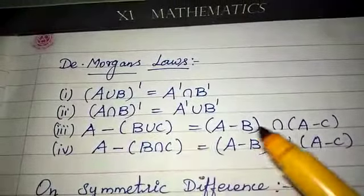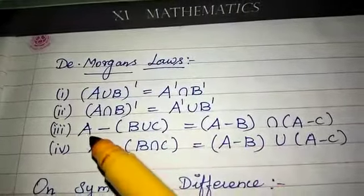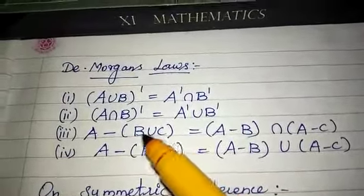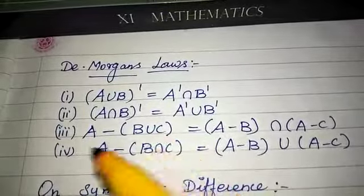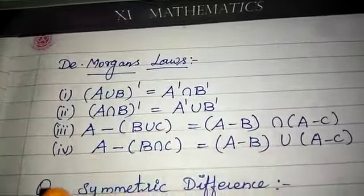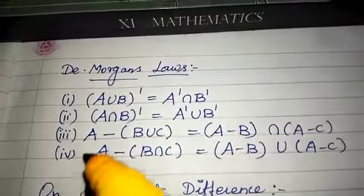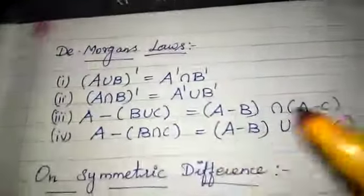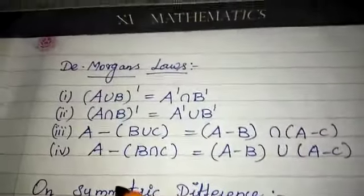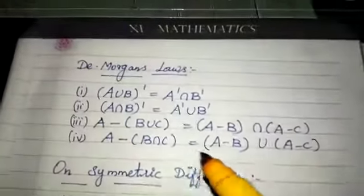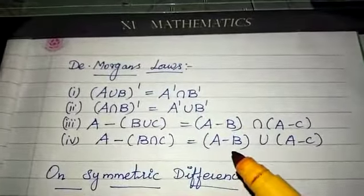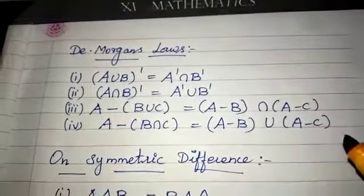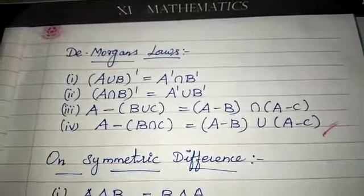Distributive property of set difference: A minus (B union C) equals (A minus B) intersection (A minus C). And A minus (B intersection C) equals (A minus B) union (A minus C).